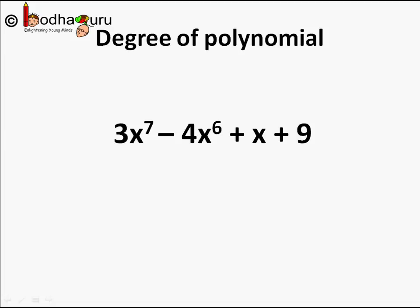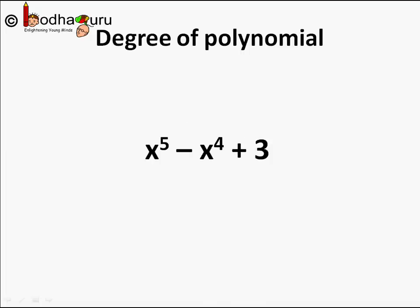We call the highest exponent of the variable in a polynomial as the degree of the polynomial. So the degree of this polynomial is 7, as the highest power of x is 7. What is the degree of x to the power 5 minus x to the power 4 plus 3? Look for the biggest exponent. It is 5. So the degree of this polynomial is 5.